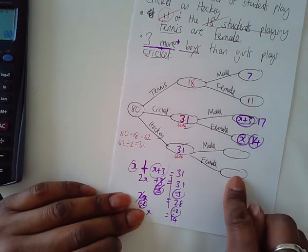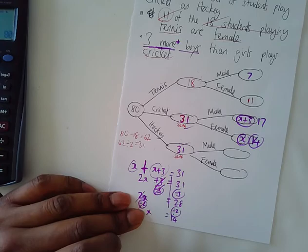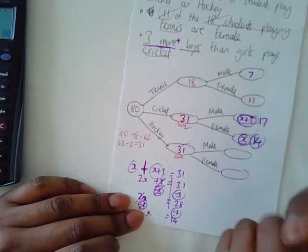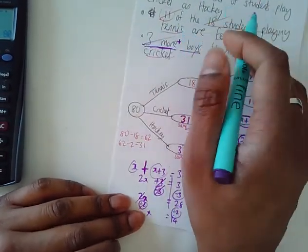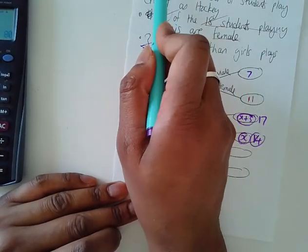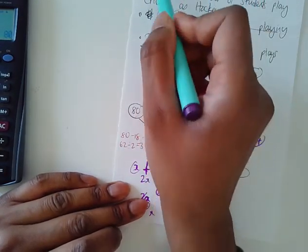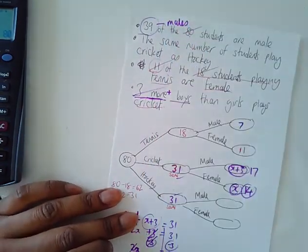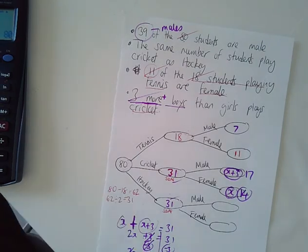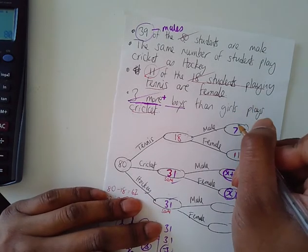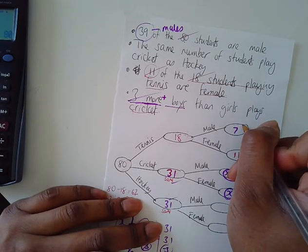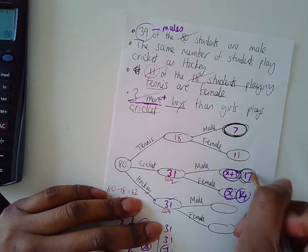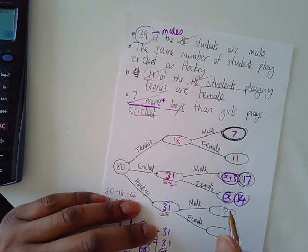Now, can't guess these numbers. Some people tend to guess numbers. We've got some information that we've not used yet. I've used this information, but I need to use this information. There are 39 of the students, 80 students, are male. There are 39 males altogether. So, just looking at the males in this diagram, we've got 7, 17, plus something to give you 39.